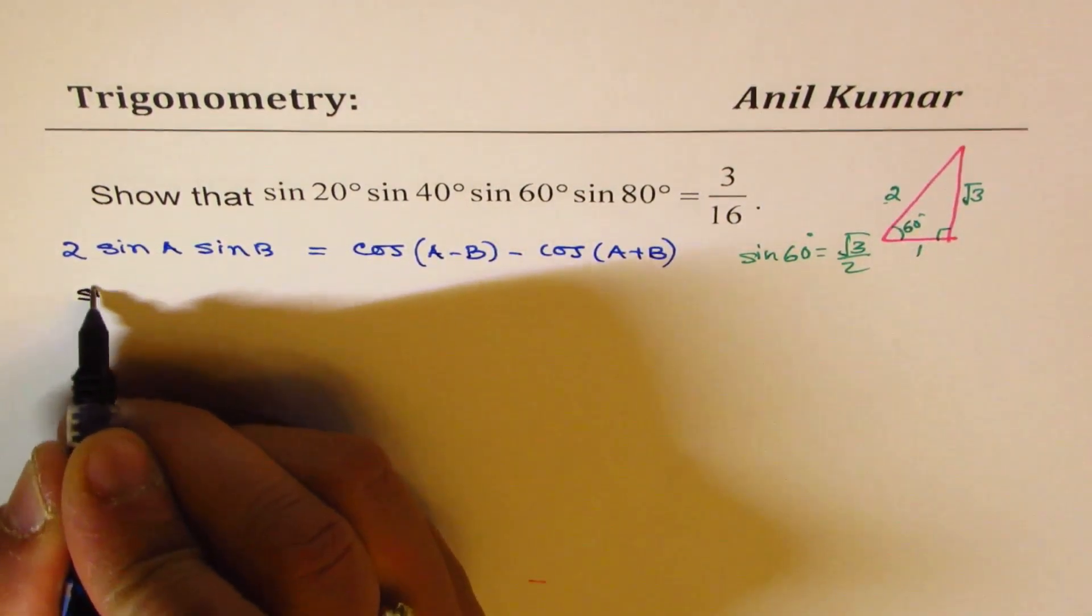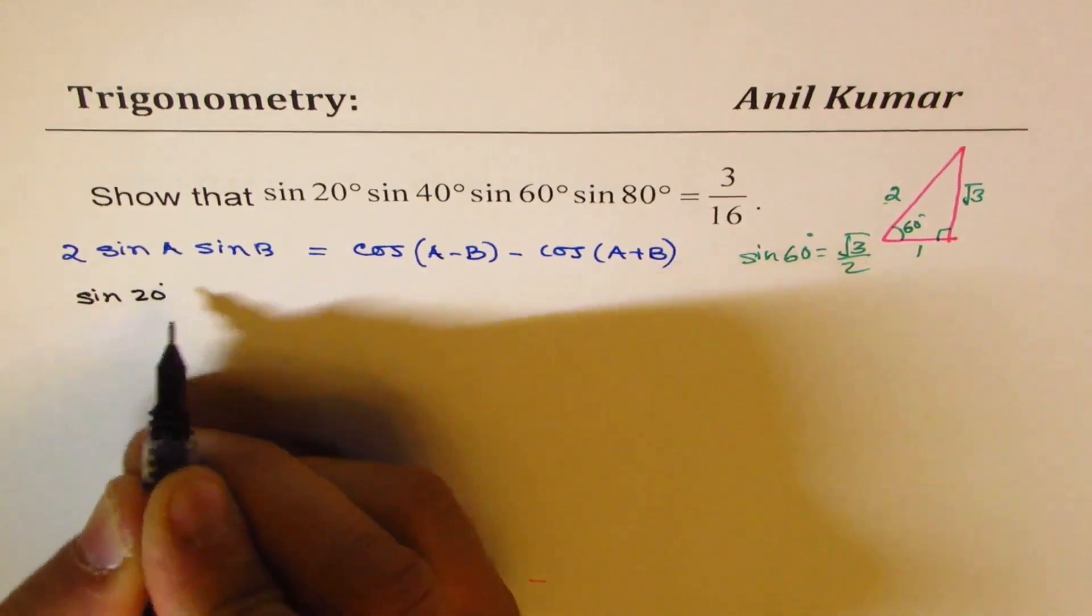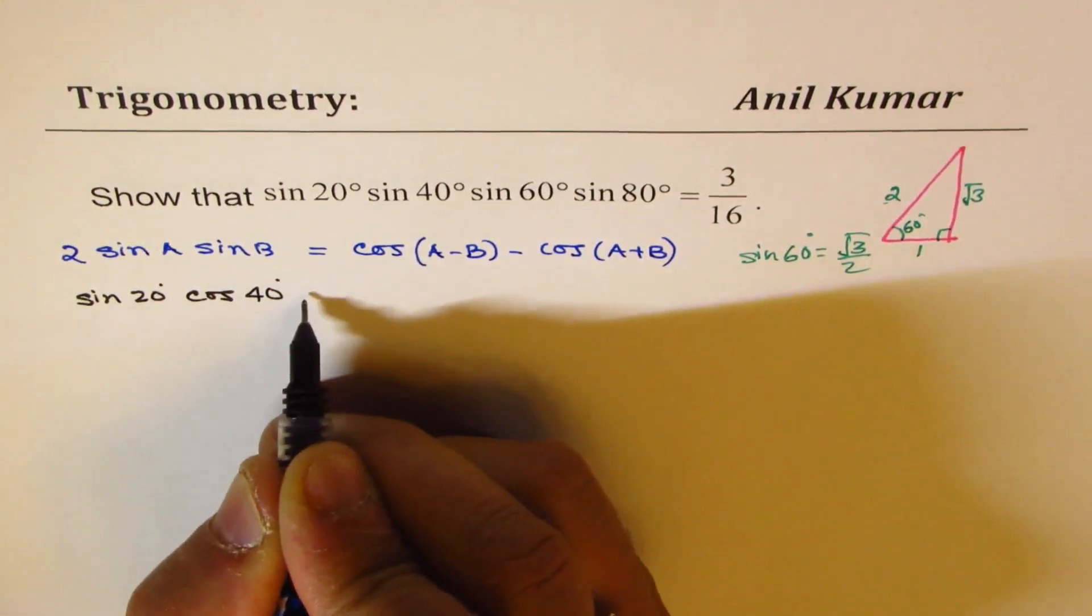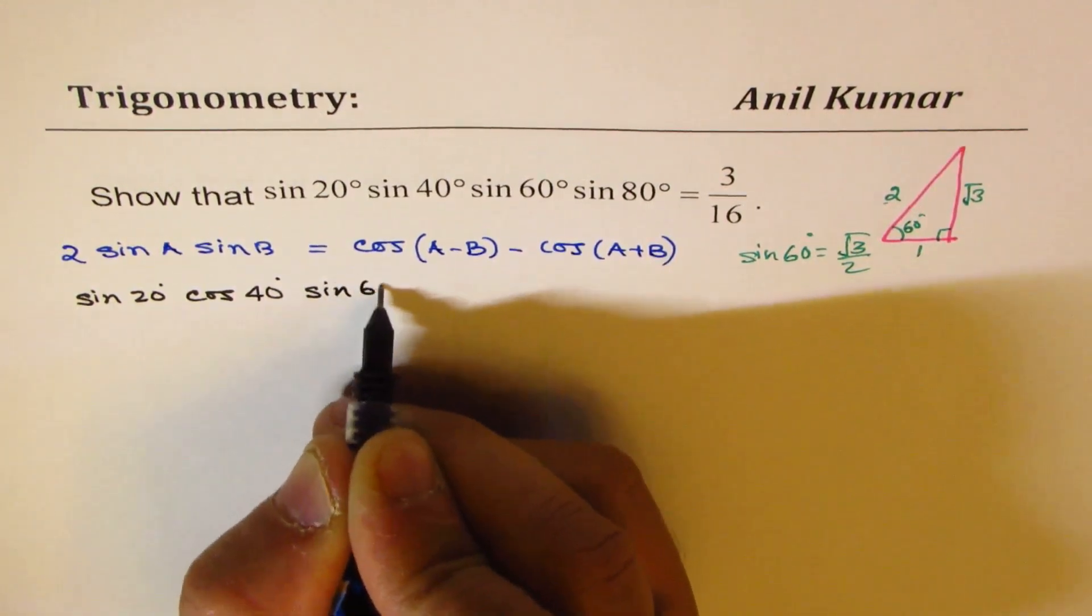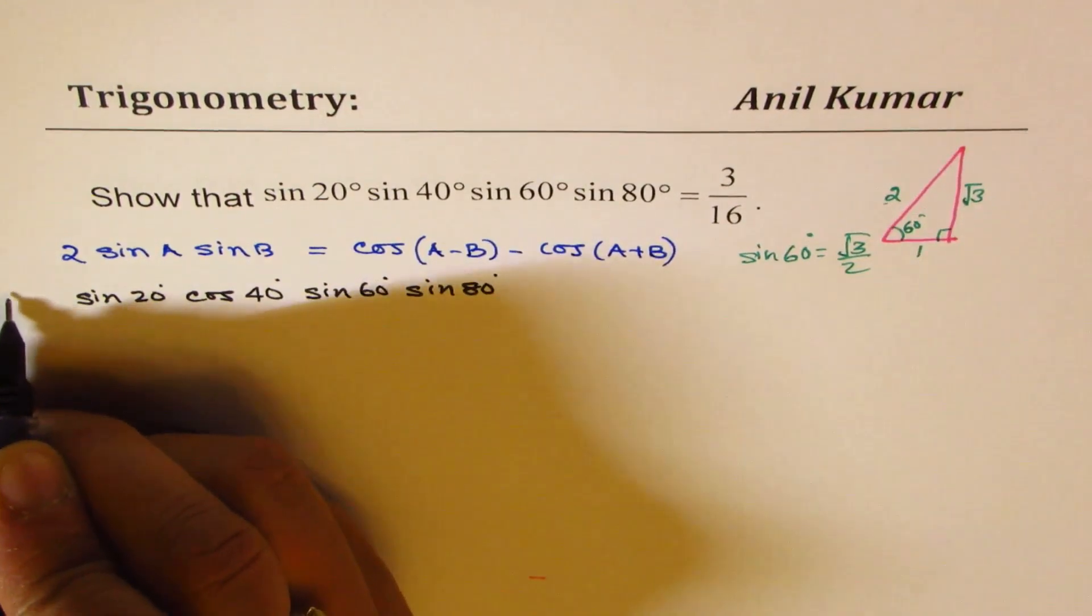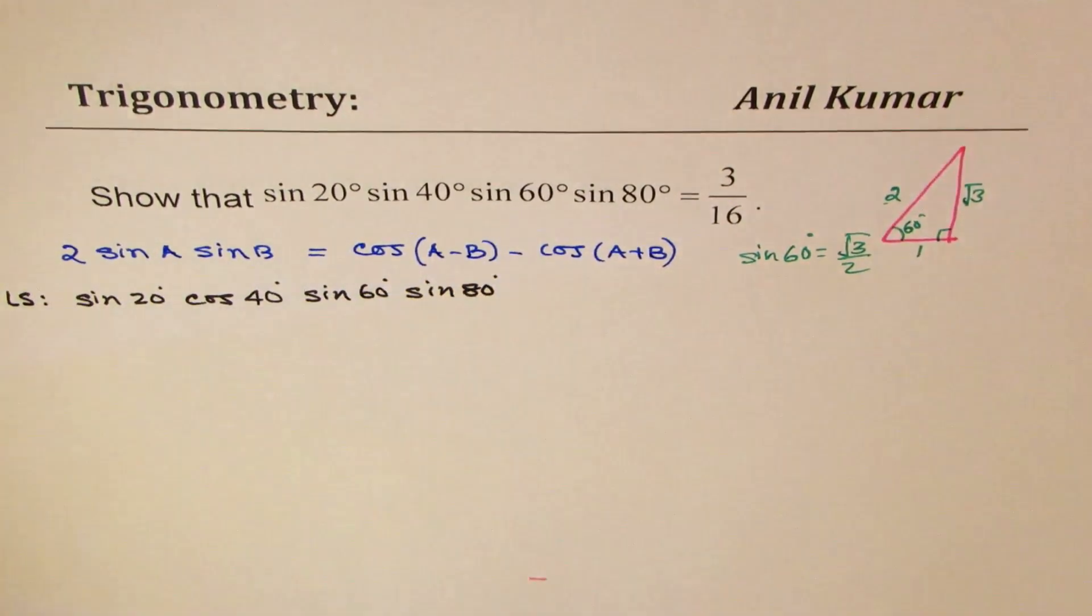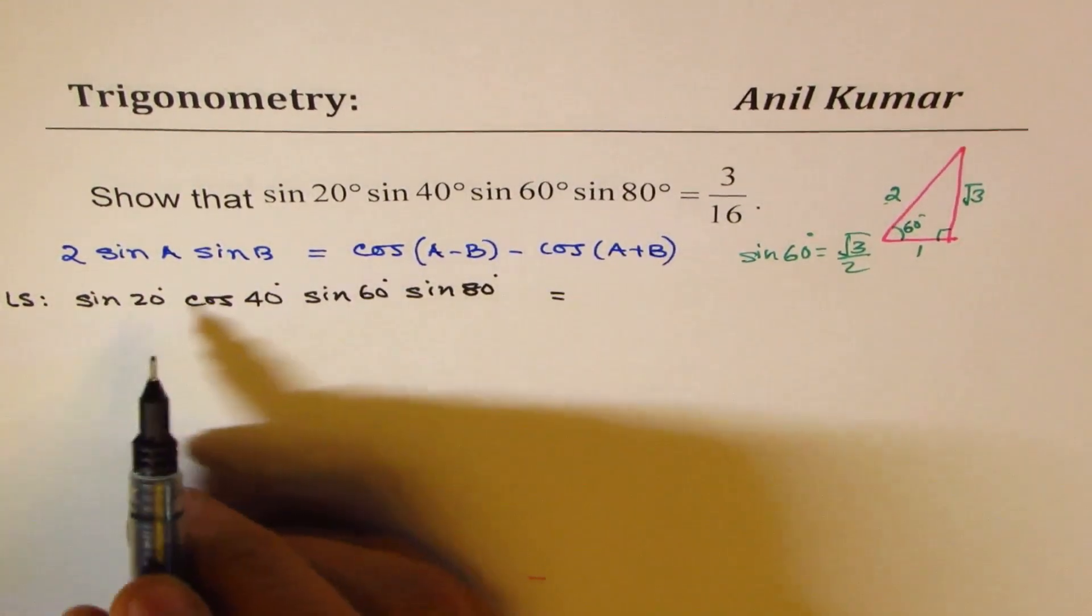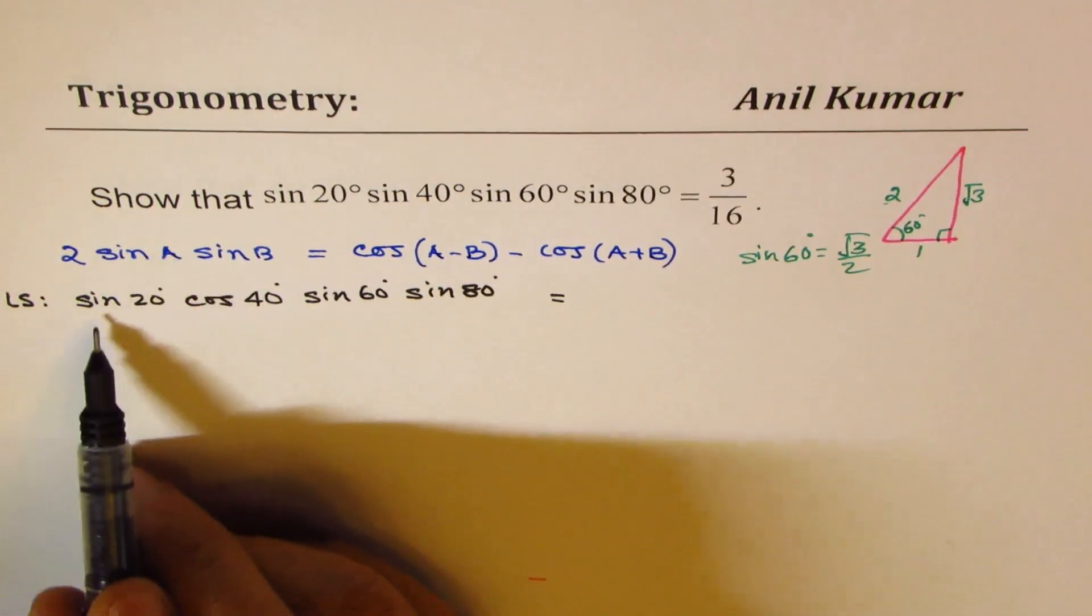The equation is sin 20° times cos 40°, times sin 60°, times sin 80°. That is my left side. So let's begin with left side. So first step which I'm going to do here is write, since I want to use this formula, write this part as 1/2 times 2.